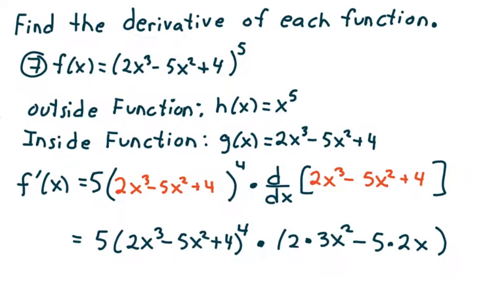The directions say find the derivative of each function. Suppose f of x equals 2x cubed minus 5x squared plus 4, to the 5th. In each one of these, I want to identify the outside function as well as the inside function before I start taking the derivative. The outside function is h of x equals x to the 5th. The inside function is g of x equals 2x cubed minus 5x squared plus 4.